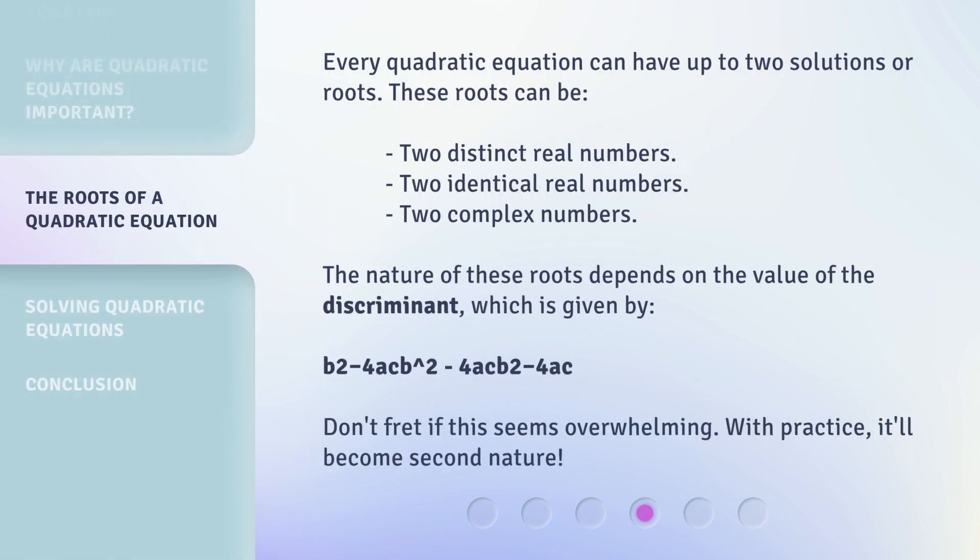Every quadratic equation can have up to two solutions or roots. These roots can be two distinct real numbers, two identical real numbers, or two complex numbers. The nature of these roots depends on the value of the discriminant.